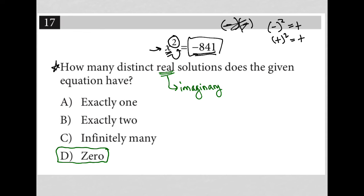So in this case, no real number is going to give you a negative value once you've squared it. You'll get an imaginary value, but not a real value. So that's why there are zero real solutions. Choice D.